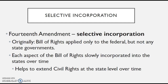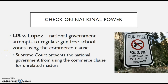Through selective incorporation, the amendments and aspects of the Bill of Rights are going to be extended to the states. But originally, the Bill of Rights only applied to the federal and not the state governments. While the national government has expanded in its power over time, there was a major check on national power.